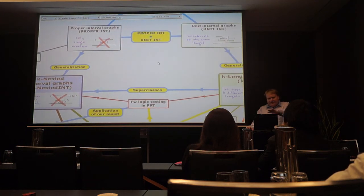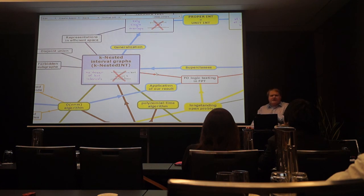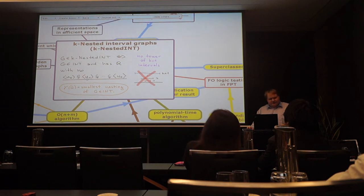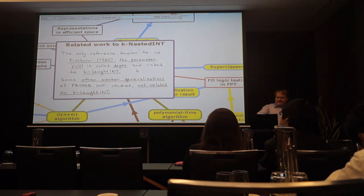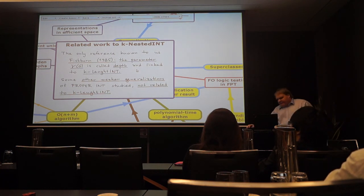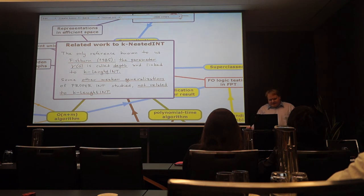We can go in a different direction. We can generalize proper interval graphs. So for proper interval graphs we are going to forbid a tower of big height. So I'm going to forbid k plus one tower of nested intervals. So there are no intervals nested in each other like this. So for k equals one you will get proper. And for a graph you can also consider this parameter. So actually not much was known about it. The only reference we found is in this book by Fishburn. There is a parameter called depth. And this parameter is studied a little bit like one or two pages. And it's linked to k-length interval graphs. So that's it. And there is nothing else. There are some other much deeper generalizations. But they are not linked to this.